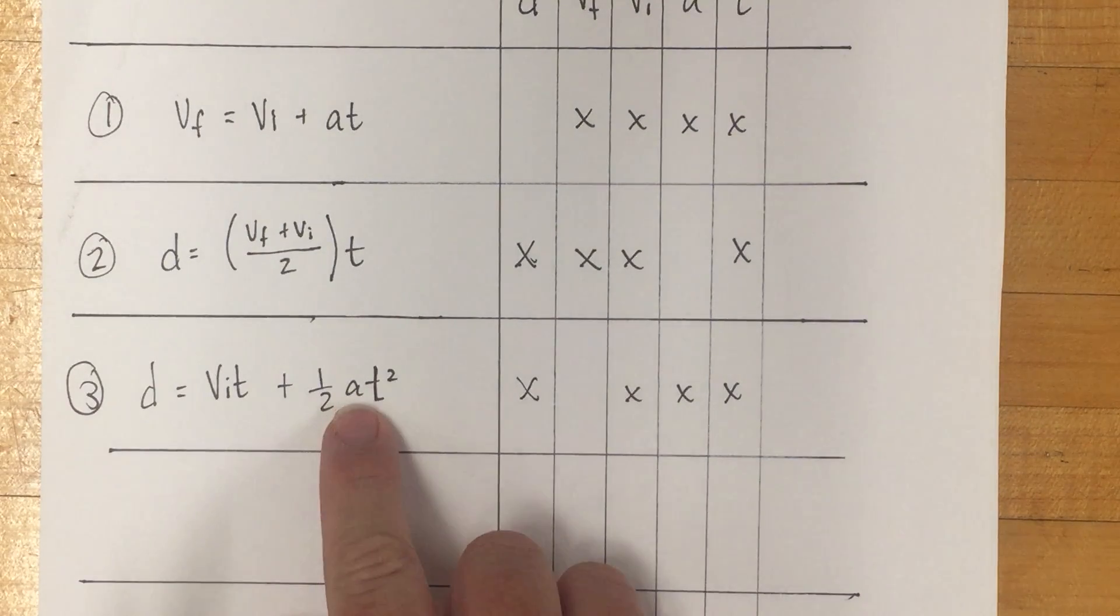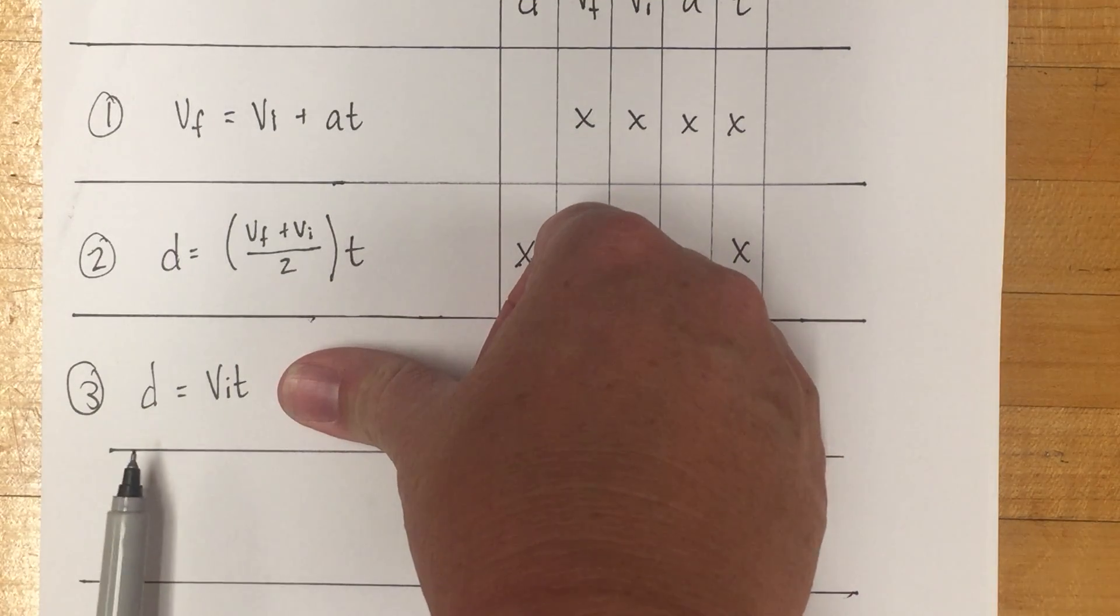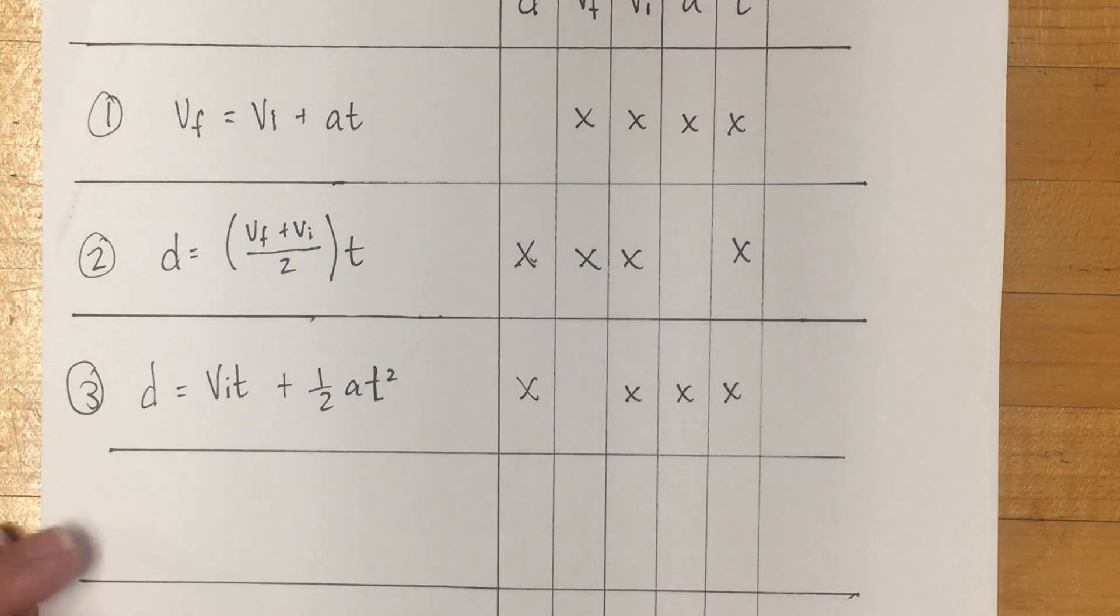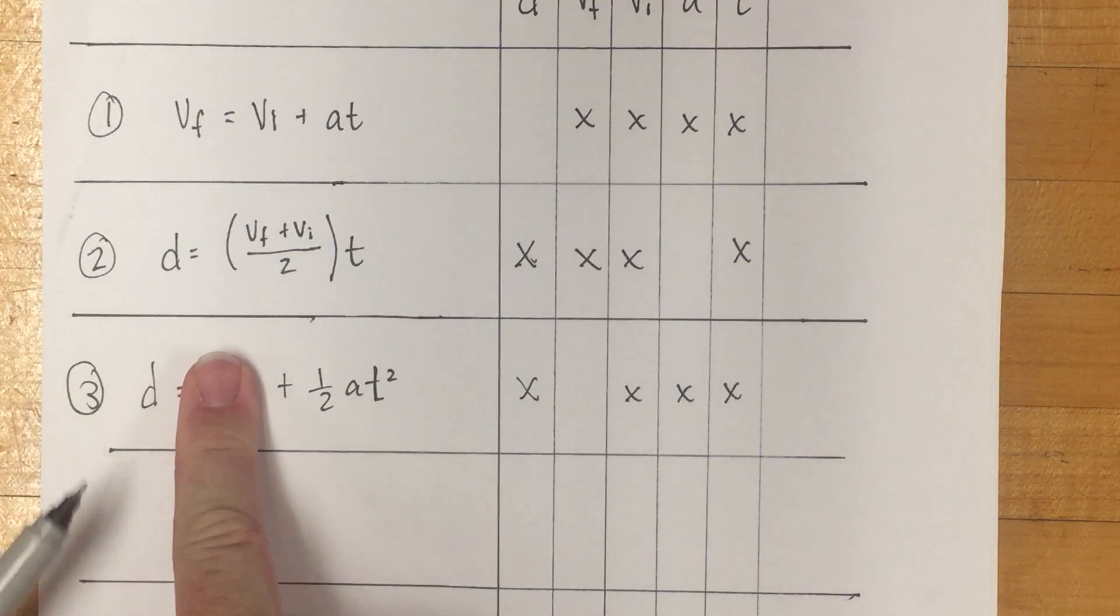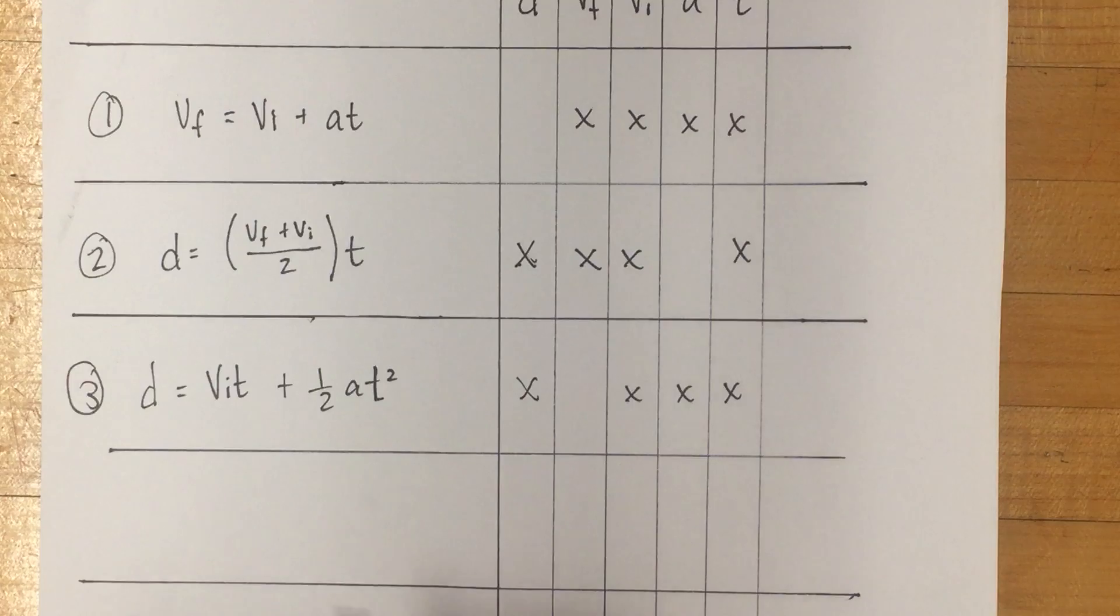If acceleration is zero, zero times anything equals zero, so you would just have d equals vi times t. If your vi is zero, you would have d equals one-half at squared. So pay attention to zeros when you're looking at that one.